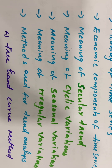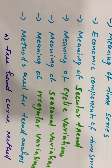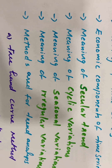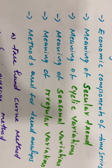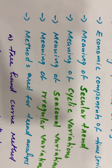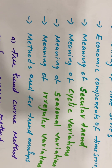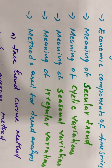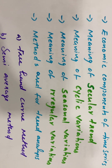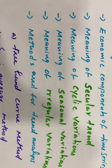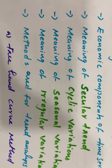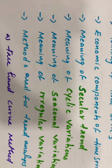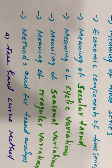Seasonal variations are periodic movements which repeat within one year or less. The seasonal variations are mainly affected by two factors: due to natural forces like earthquake, flood, etc. The most important factor in seasonal variations is climatic changes.